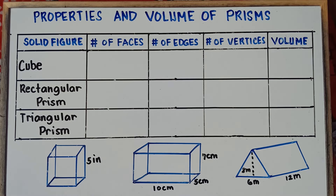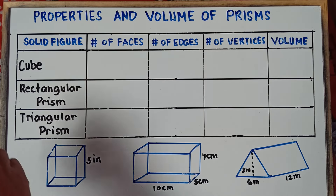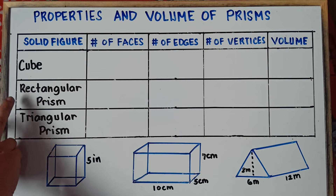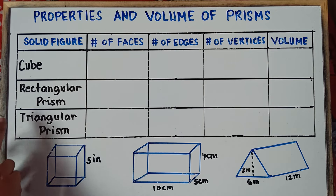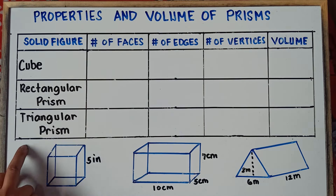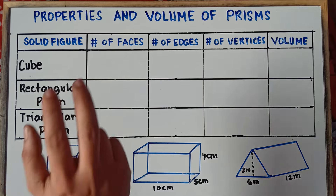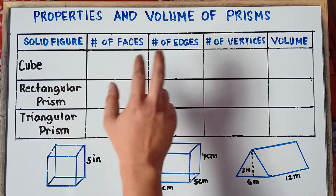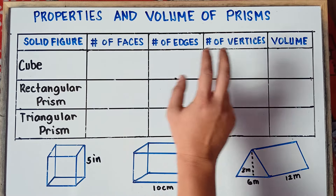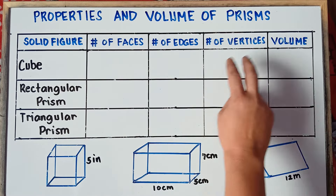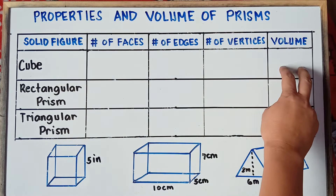So these are the given solid figures. We have a cube, rectangular prism, and triangular prism. And we're told to find the number of faces, the number of edges, the number of vertices, as well as the volume.